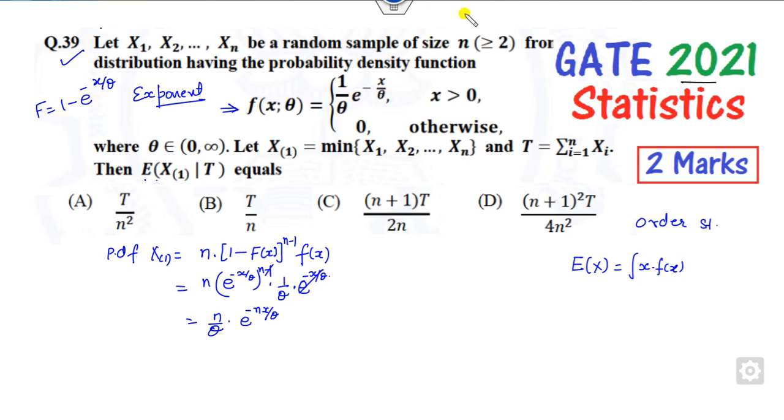This is the integral of x(n/θ)e^(-nx/θ) with respect to x from 0 to infinity. If you take n/θ outside, you get (n/θ) times the integral of xe^(-nx/θ)